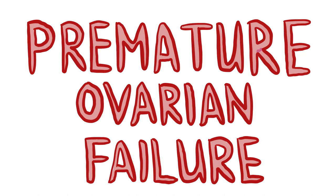Let's move on to premature ovarian failure. Premature ovarian failure is defined as the onset of menopausal symptoms and elevated gonadotrophin levels before the age of 40 years. This is a problem because there is an increased risk of osteoporosis, cardiovascular disease and urogenital complications due to a longer time in an oestrogen deficient state. It can also be problematic if the patient had not yet completed her family. Premature ovarian failure is also associated with an increased risk of endometrial cancer.